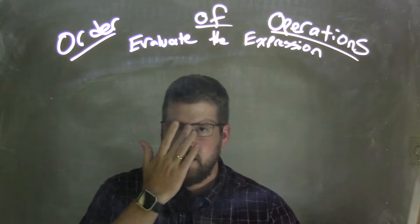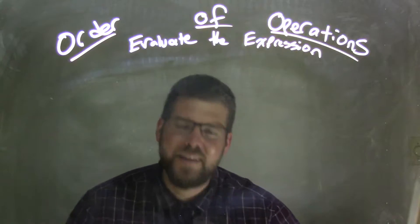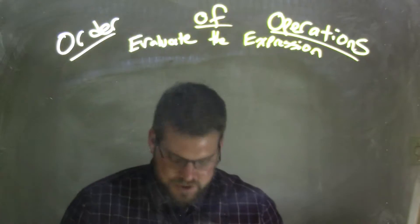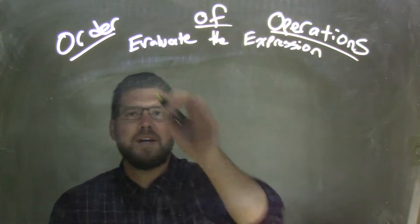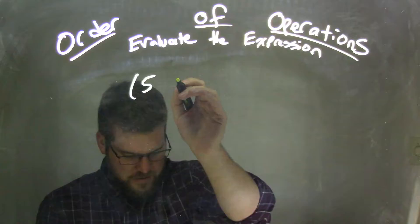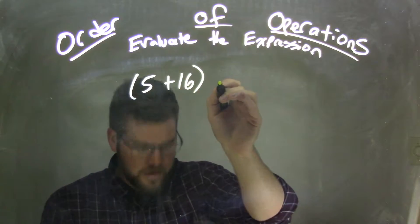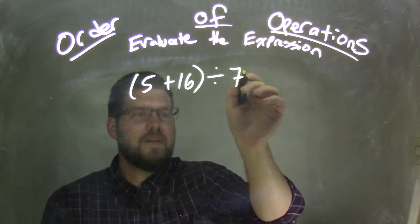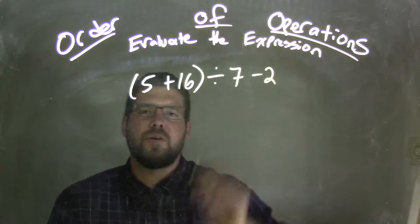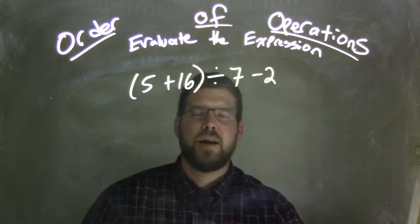Hi, I'm Sean Gann, and this is MinuteMath. Today we're going to learn about the order of operations. If I was given this expression: 5 plus 16 divided by 7 minus 2. So I have 5 plus 16 divided by 7 minus 2.